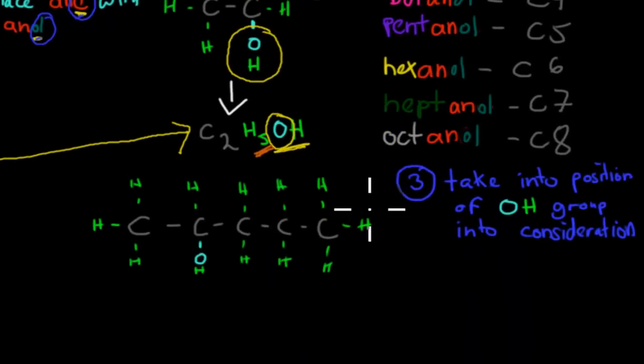And last but not least, we have to take into consideration the position of the OH group. So for example, here we've got 1, 2, 3, 4, 5, 5 carbons, so 5 carbons, C5, that's a pent, a pentanol. But if we look at the OH group, in this case the OH group is right here. We have to actually take that into consideration when we name this molecule.